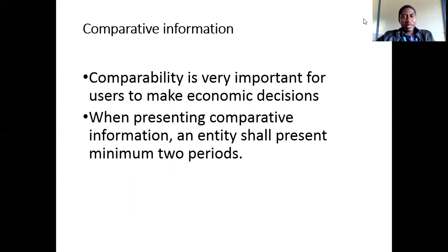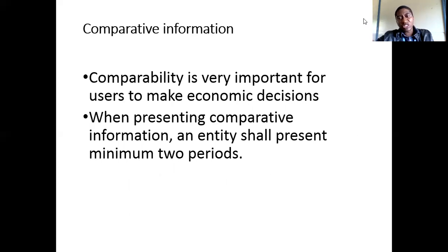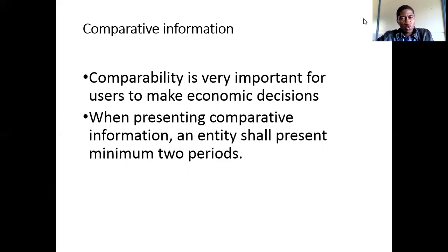Another feature is comparative information. Information from financial statements should be capable of being compared — you can compare against competitors, against industries, or against periods, for example comparing 2019 financial statements against 2018. When presenting comparative information, an entity shall have a minimum of two periods. You cannot compare one period alone; that is not a comparison — you should compare against something.